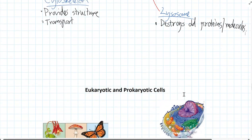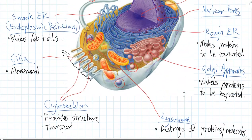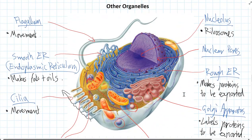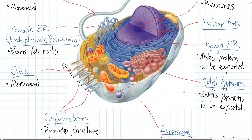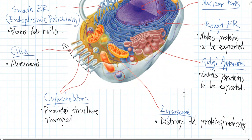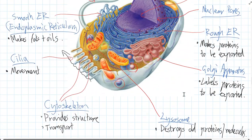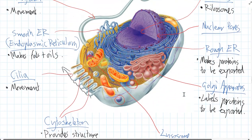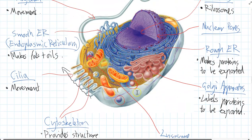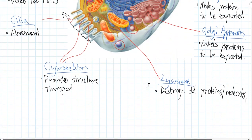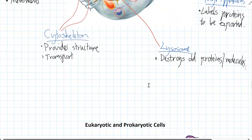That's all the organelles you need to know — all the basic ones plus all of these additional ones. Cells are really complex. It's amazing how much variety and how many different structures have evolved in cells over the billions of years.